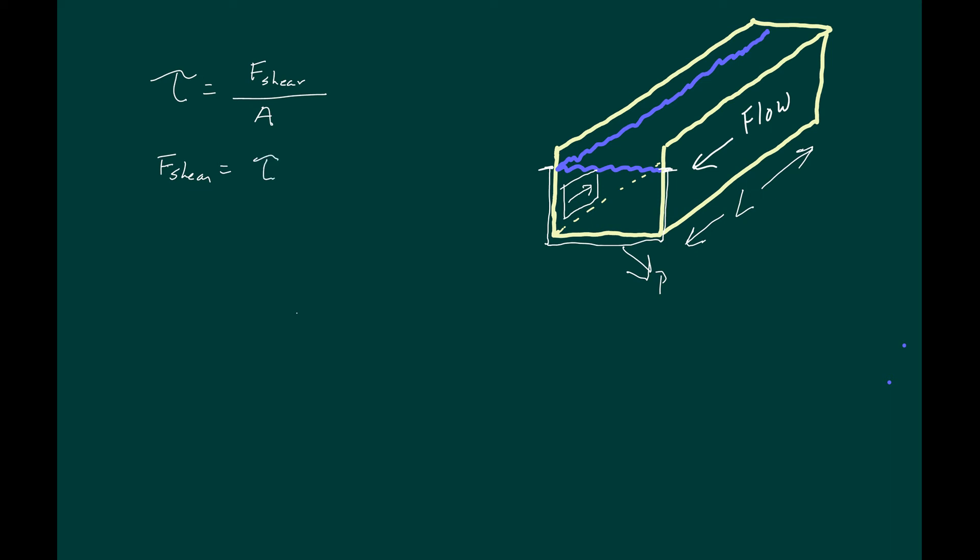Tau times area and applying this expression to our diagram, tau multiplied times the wetted perimeter times length will give us the same expression. In other words, wetted perimeter times length is area.